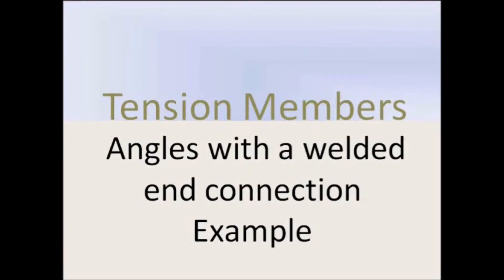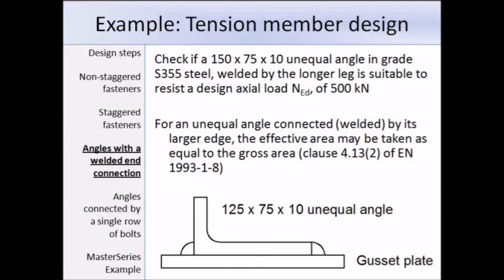Now that we know that, we're going to go through a quick example. This is a different section from the one we used in part one of this lecture. We have a 125×75×10 unequal angle and it is welded by the longer leg, so we need to work out the design tensile resistance and compare that to the design axial load of 500kN.